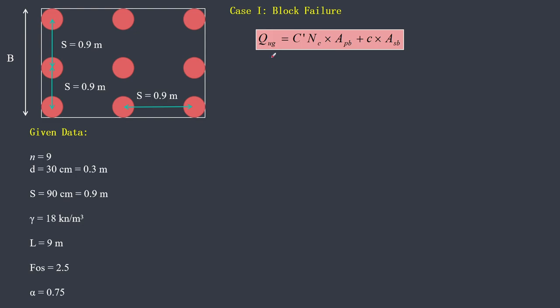In Case 1, the group capacity for block failure is given by the formula: Qug = c'·nc·Apb + c·Asb, where Asb is the surface area of the block and Apb is the cross-sectional area of the block. First, we determine c' and c. If the value of c' is not given separately but qu is given, divide qu by 2 to get c.